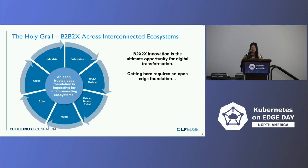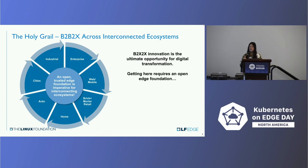From the point of view of an open trusted edge foundation, it's B2X2X — for example B2B2C. A lot of people are asking how 5G is being deployed. A big cloud provider gets the 5G core from telcos and slices it into three: one for cloud gaming, one for HD video, and one for live streaming — then it goes B2B2C to end users.